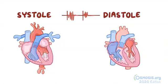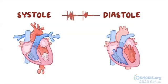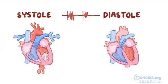As the left ventricle fills with blood during diastole, the pressure within it rises. Then the left ventricle contracts, increasing the pressure within the left ventricle even more and forcing blood through the aortic valve, into the aorta and the whole arterial system.